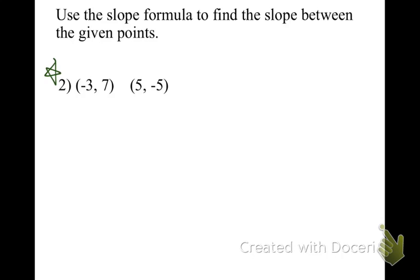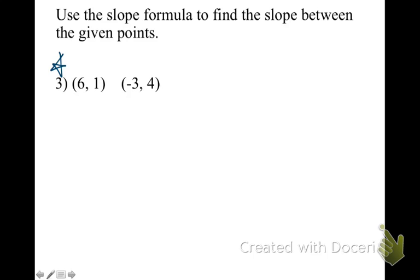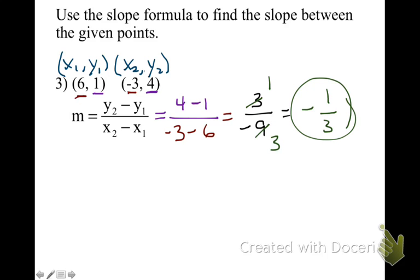On your own, go ahead and try number 2. This one's a little trickier — we were subtracting a negative number, so those became positives. After simplifying, you should have gotten negative 3 halves. It doesn't matter which is point 1 or point 2 as long as you label it — either way you'll get the same exact answer, negative 3 over 2. Then try the next one using the slope formula; you should have gotten negative 1 third. Make sure you label point 1 and point 2 and plug in those values.